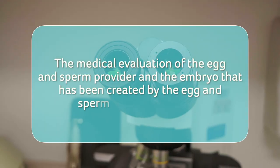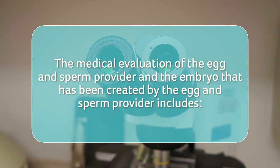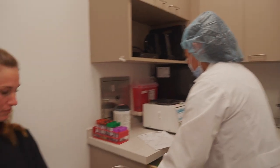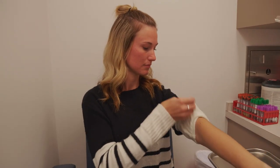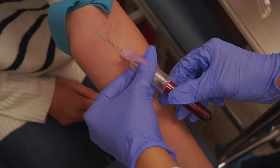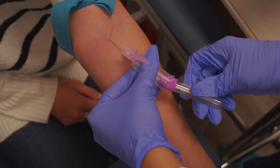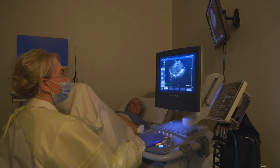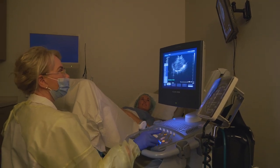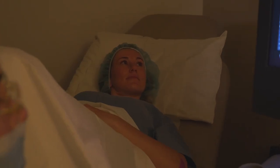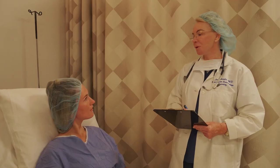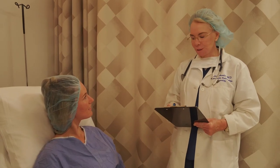The medical evaluation of the egg and sperm provider and the embryo includes the following. The egg provider's medical evaluation consists of testing for hormonal levels, infectious diseases, and genetic screening. A physical exam, along with an ultrasound, is performed to observe the normalcy of the ovaries and pelvic anatomy. If working with an egg donor, a drug screen is required and the egg donor must undergo an extensive evaluation to determine if she is a good candidate.